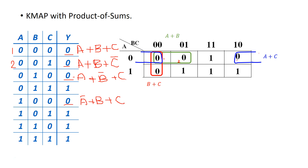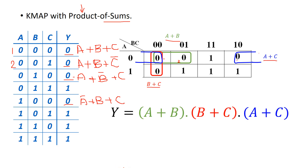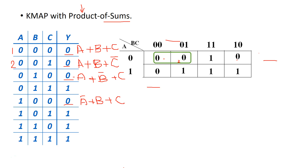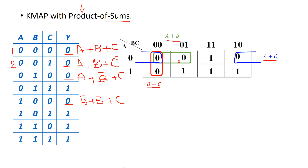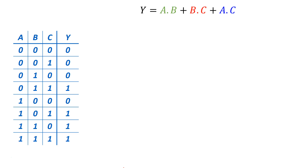The product of sums expression — notice how these look like sums: A OR B, B OR C, A OR C. Because of the OR it looks like sums. Now we need to create the product of them, so output Y is the AND of these sums: Y = (A OR B) AND (B OR C) AND (A OR C). That is the simplified product of sums Boolean expression, compared to the simplified sum of products expression we found earlier.